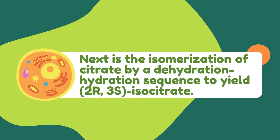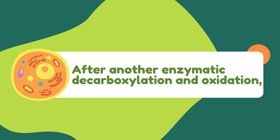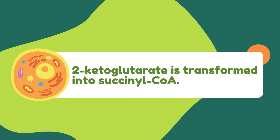Next is the isomerization of citrate by a dehydration-hydration sequence to yield 2R,3S-isocitrate. Further enzymatic oxidation and decarboxylation gives 2-ketoglutarate. After another enzymatic decarboxylation and oxidation, 2-ketoglutarate is transformed into succinyl-CoA.